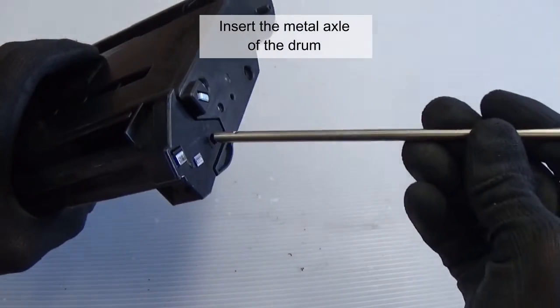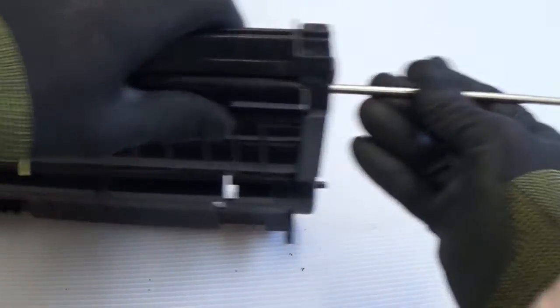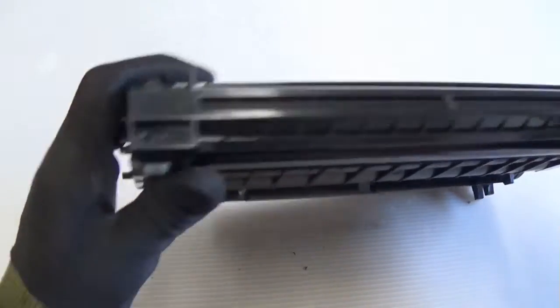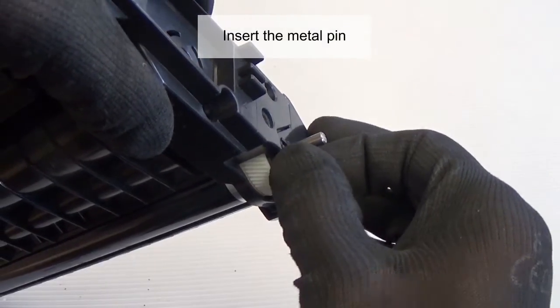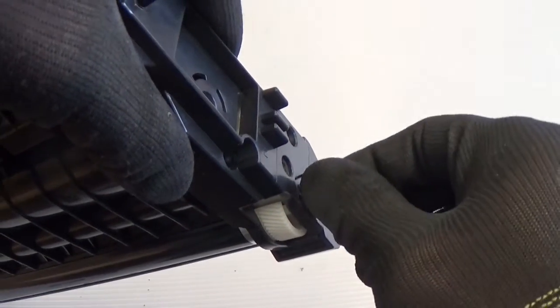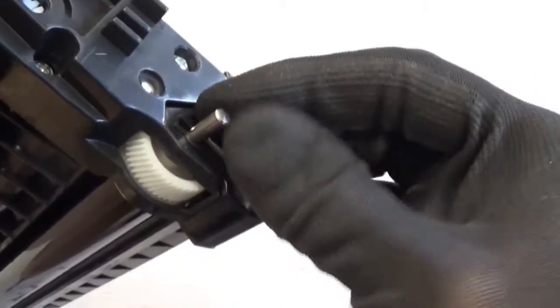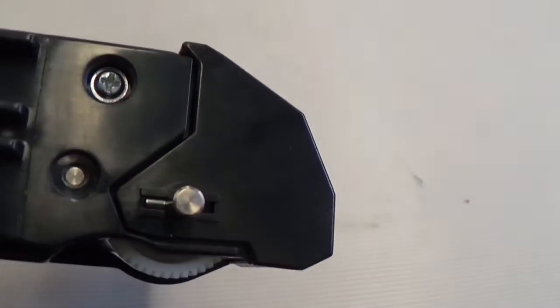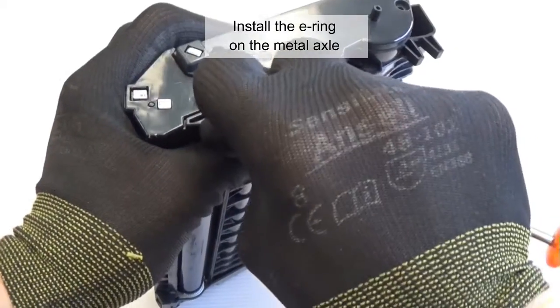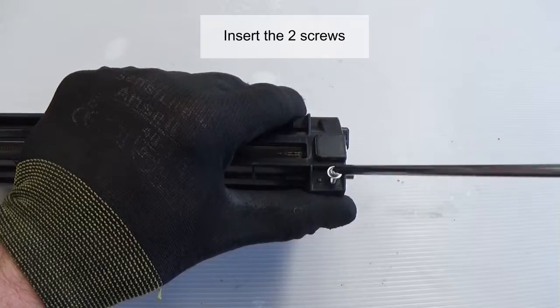Insert the metal axle of the drum. Insert the metal pin. Install the E-ring on the metal axle. Insert the two screws.